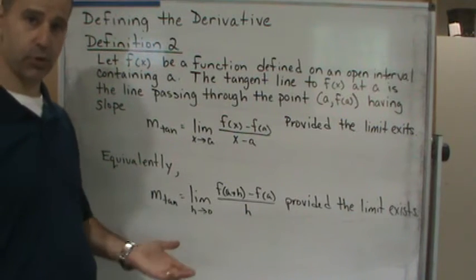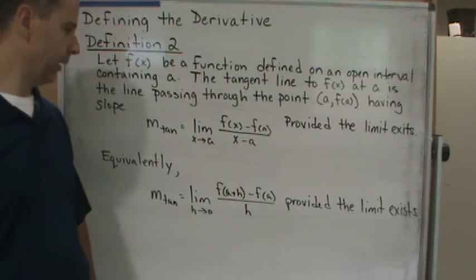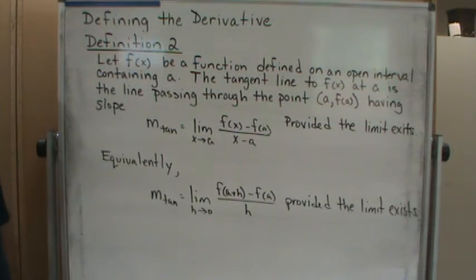Again, it really comes down to ease of calculation. And again, provided that the limit exists. And so this is what we're going to use to find the slope of the tangent line. We're going to use limits.